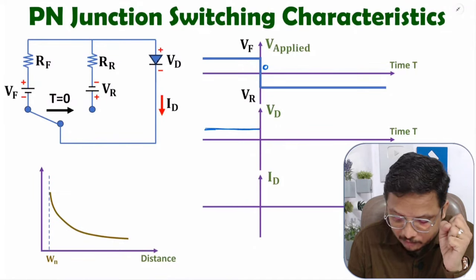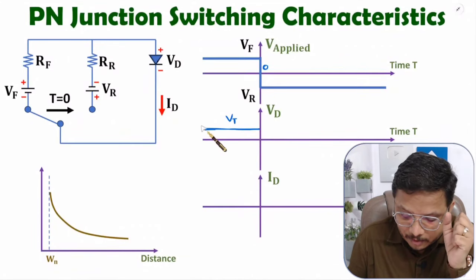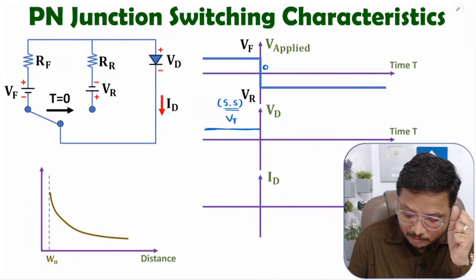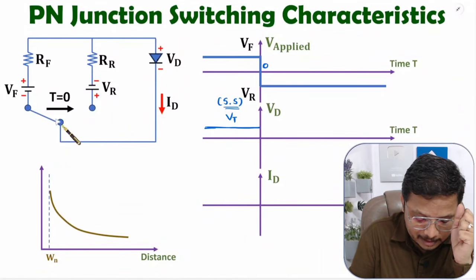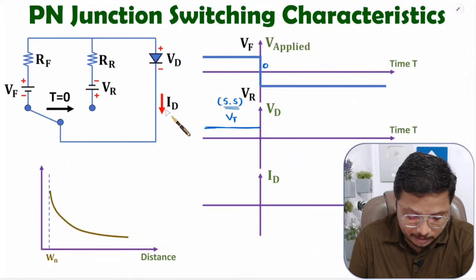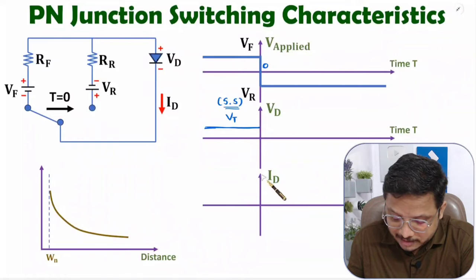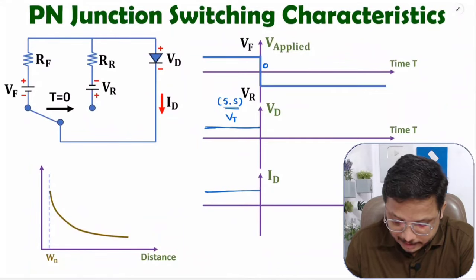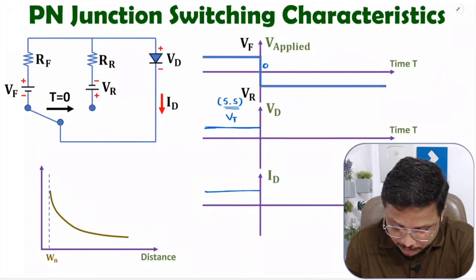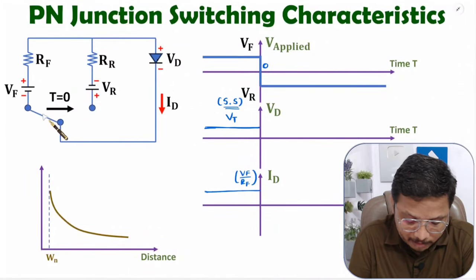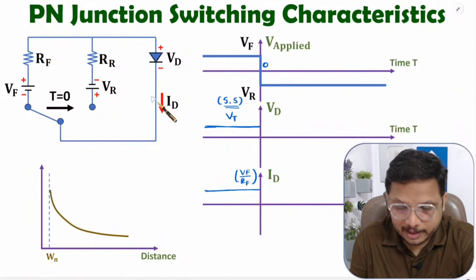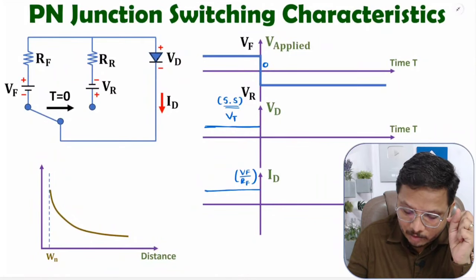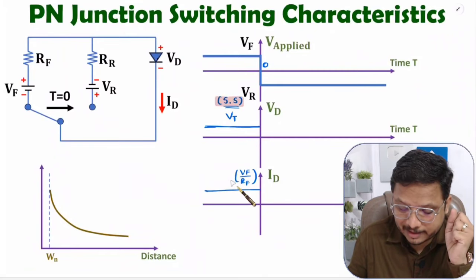In forward steady state, the diode current ID will be positive and its value will be VF divided by RF, where VF is the forward bias voltage and RF is the resistance in forward bias. Here we are ignoring the diode's forward resistance and treating it as zero. So ideally, ID equals VF over RF. This is what we are talking about for steady state in forward bias.